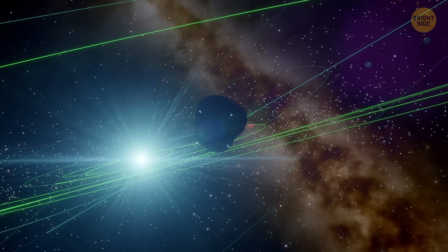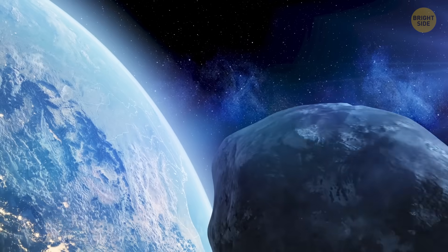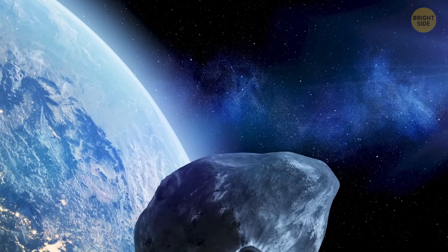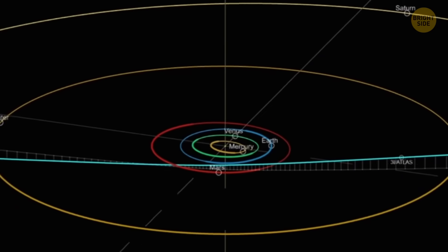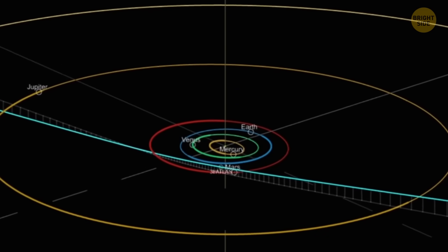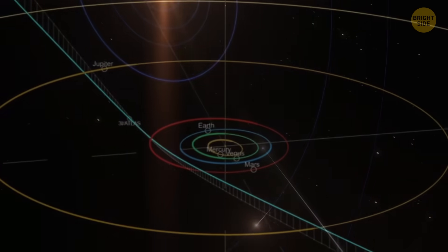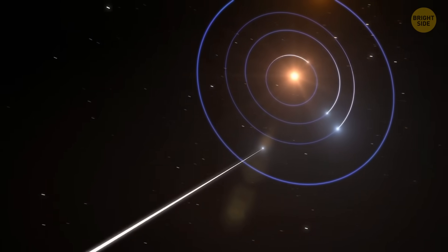Well, now that you're familiar with 3i Atlas, we gotta answer the biggest question of all. Is it a threat to us? Good news! No, the comet isn't dangerous, and it's going to stay really far from Earth. So, we can all take a deep breath. Well, I feel better.